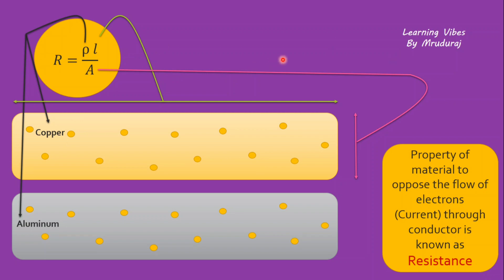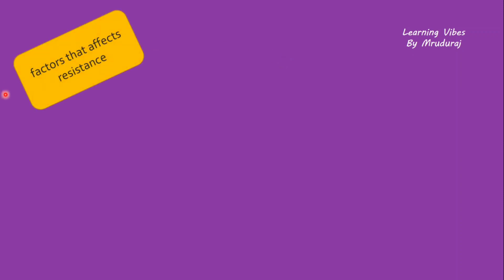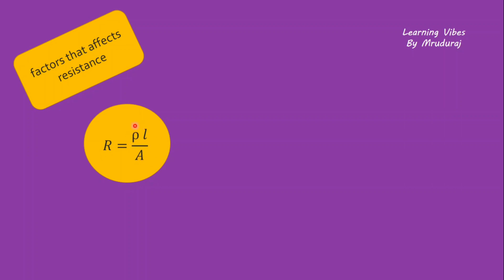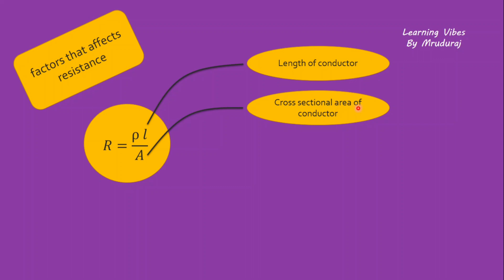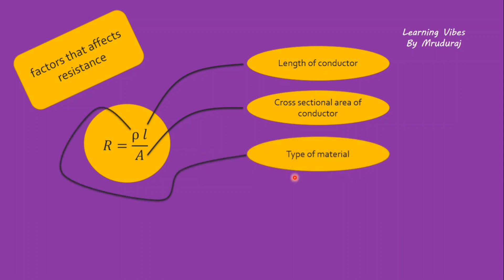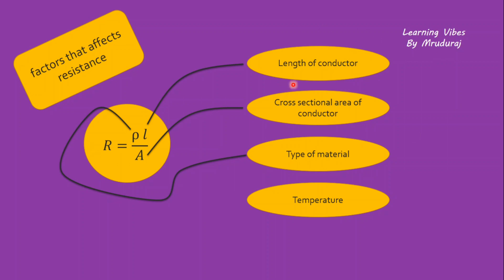Now we'll go to our main topic: the factors that affect resistance. Let's recall the equation — R = ρL/A. So there are three factors from this equation plus one more. First is length: if we change the length, resistance is going to change. Next is A, the cross-sectional area of the conductor — if we change the cross-sectional area, resistance will change. Third is ρ, the type of material — if we change the type of material, resistance will change. The fourth is temperature, which also plays a key role in the value of resistance.